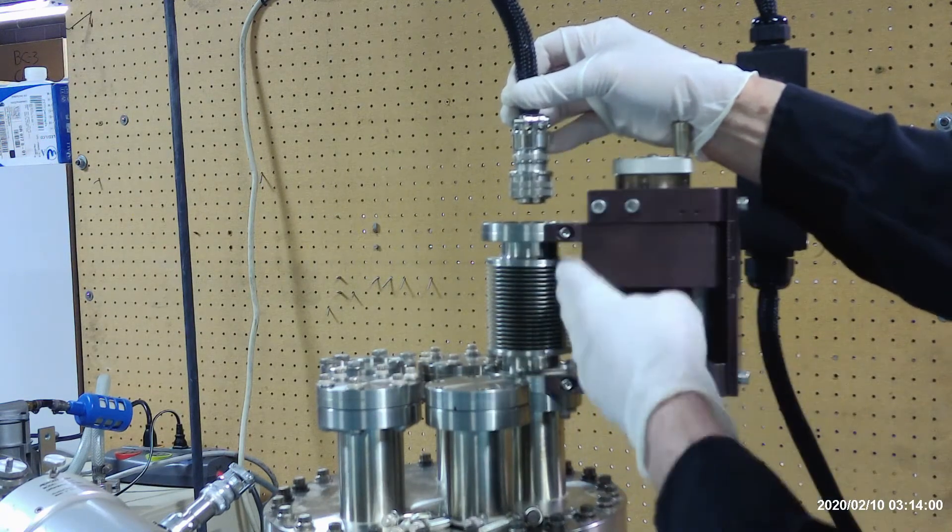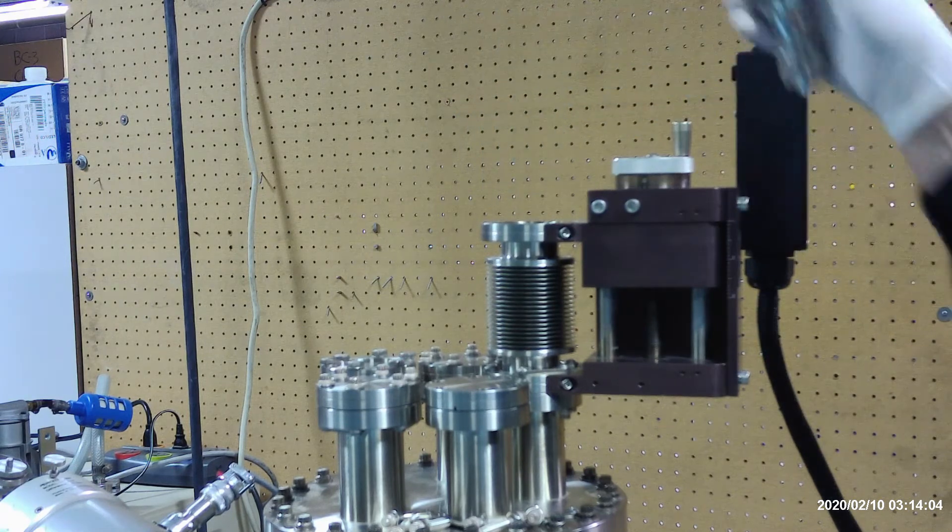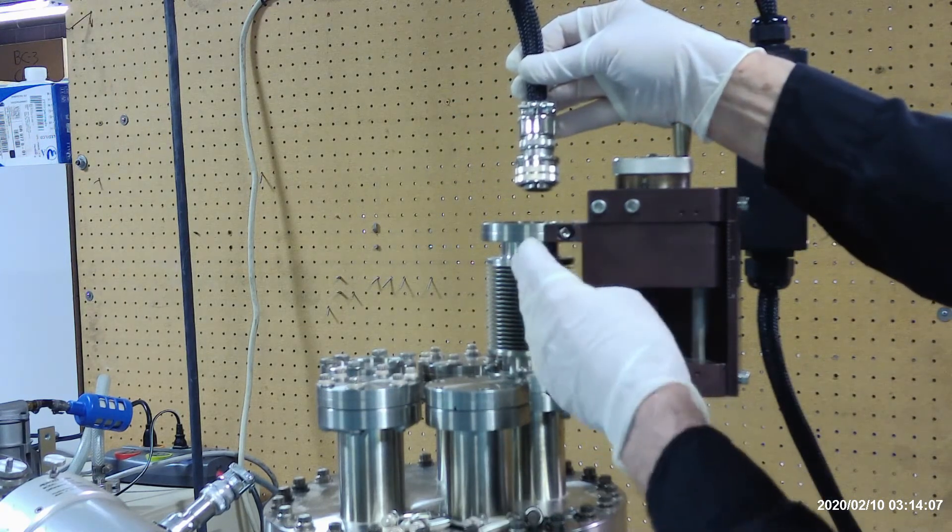When you install the analyzer, you want the key to line up as closely as possible. That way you're not putting any undue strain on the cable. We can see that the key is lined up in the front.